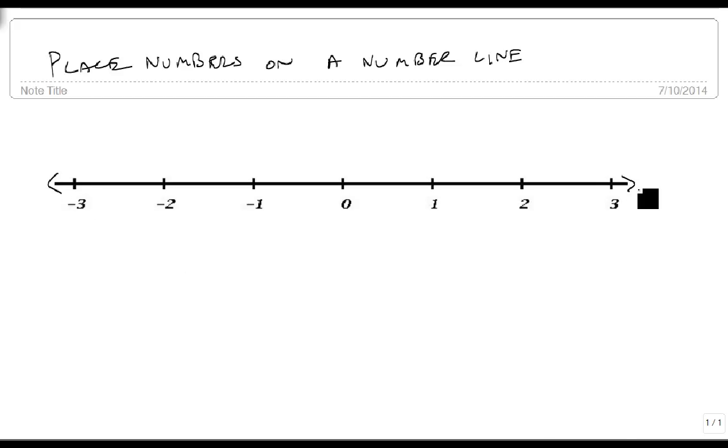And what we care about here is that everything to the left is smaller than what's to the right. So 0 is to the left of 1 because it's smaller than 1, and vice versa, 2 is to the right of 1 because it's bigger than 1.